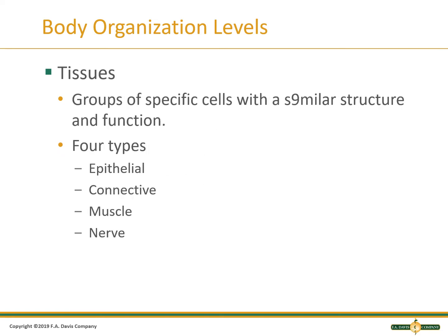A group of specialized cells with a similar structure and function form the different types of body tissues and together perform specialized functions. There are four tissue types. Epithelial tissue is made of flat cells in a sheet-like arrangement that cover and line body surfaces. Your skin is epithelial tissue.